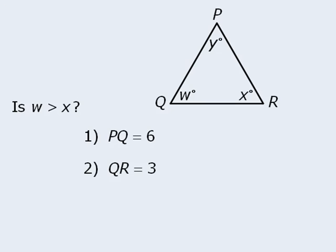Now one of the first things we should recognize is that the two statements do not provide any information about angles. Instead, they provide information about the lengths of certain sides of the given triangle.